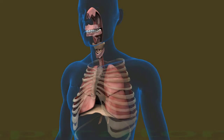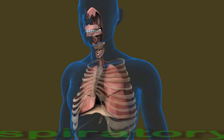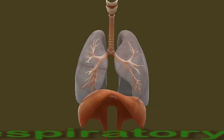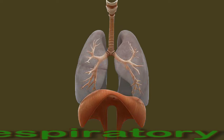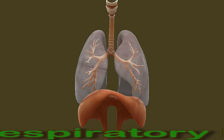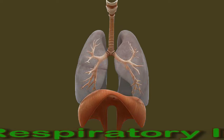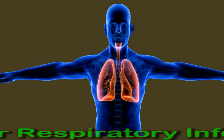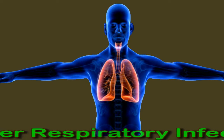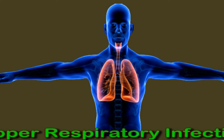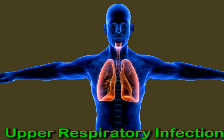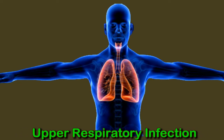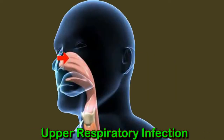An upper respiratory infection occurs when a virus or bacteria enter the body, usually through the mouth or nose. The infection may pass to another person through touch or a sneeze or cough. Adults tend to get between two and three upper respiratory infections per year. Children, especially young children, may have more of these infections because their immune systems are still developing.